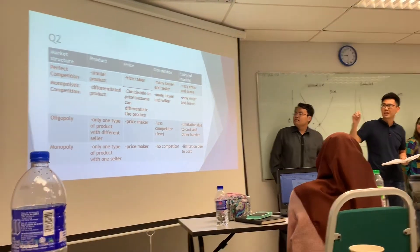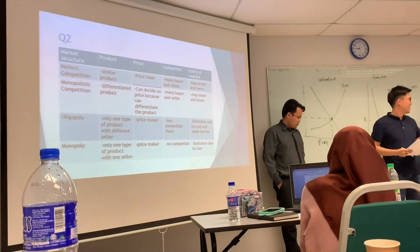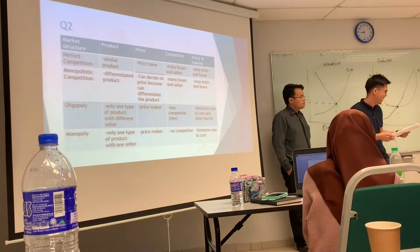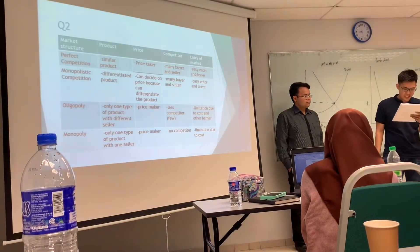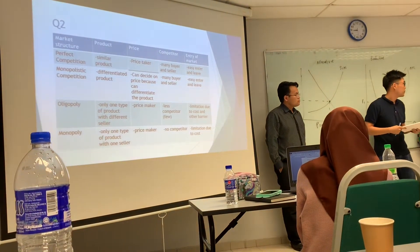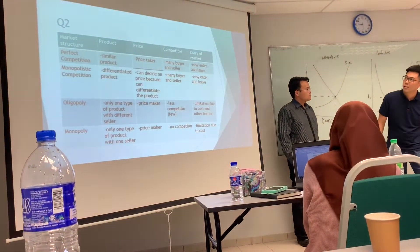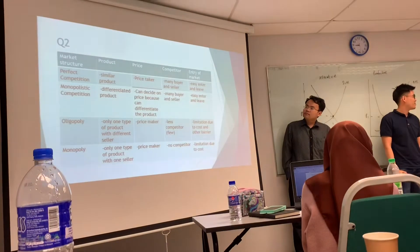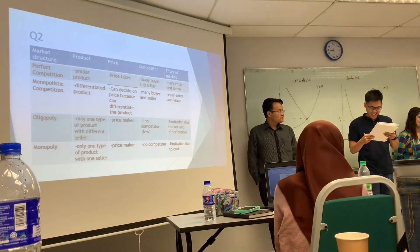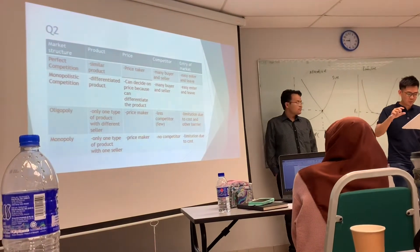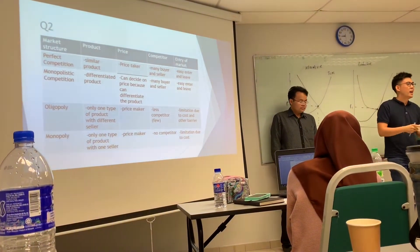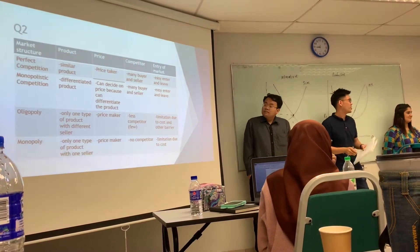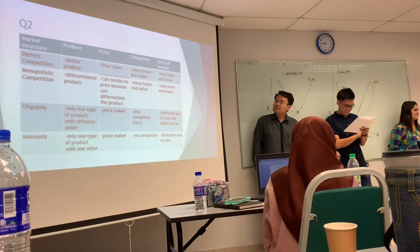I'll be talking about the first two: perfect competition and monopolistic competition. For perfect competition, we'll discuss about the product, price, competitors, and entering the market. In perfect competition, products are very similar with like cost and like price, and one manufacturer cannot control the price. No need for branding or marketing strategy.